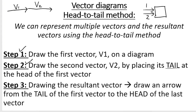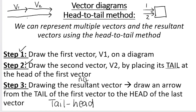To draw the resultant or net vector, we draw an arrow from the tail of the first vector to the head of the last. This is why some people prefer to call this the tail-to-head method — because the resultant goes from the tail of the first, pointing to the head of the last. That is our net vector. Remember to always label your diagrams.